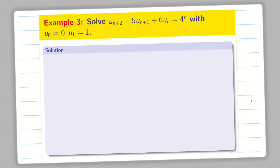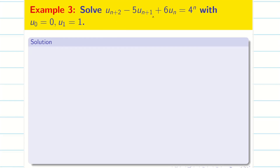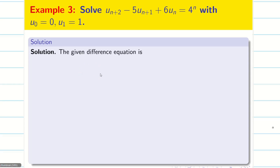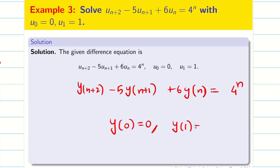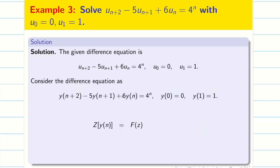I am taking the same problem: solve u(n+2) minus 5u(n+1) plus 6u(n) equal to 4 to the power n. As I said, whatever the problem is, convert it into the convenient format y(n). So convert this into y(n+2) minus 5y(n+1) plus 6y(n) equal to 4 power n. The given conditions are y(0) = 0 and y(1) = 1. Next, we have to write the formula for Z of y(n), that is F(z). We are going to find Z inverse of capital F(z), which is going to be our answer y(n). So Z of y(n) is equal to F(z).